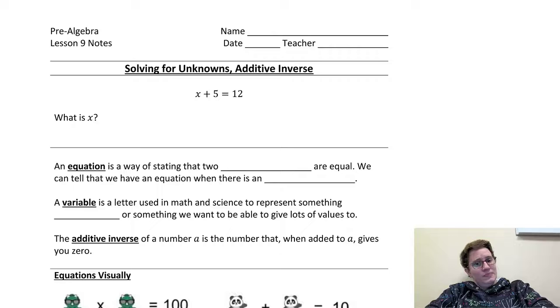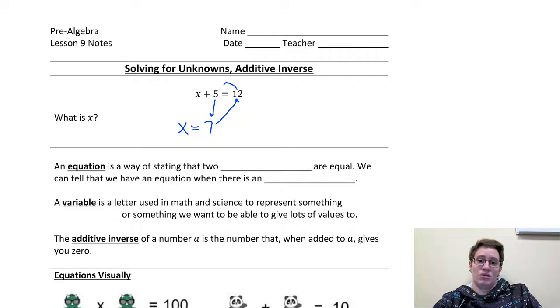And so hopefully, whether you know how to solve an equation or not yet, you can think through that and be like, okay, what do I need to add 5 to that gives me 12? And you can come up with 7. And in algebra, what we do is we'll write x equals 7.